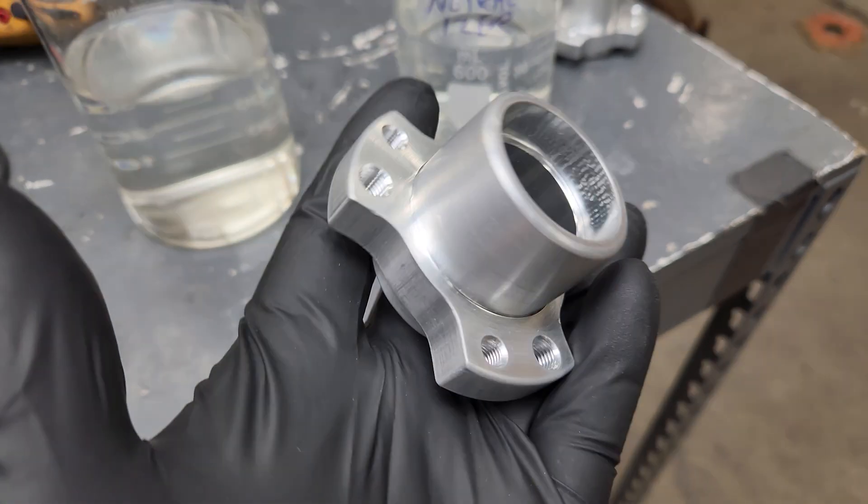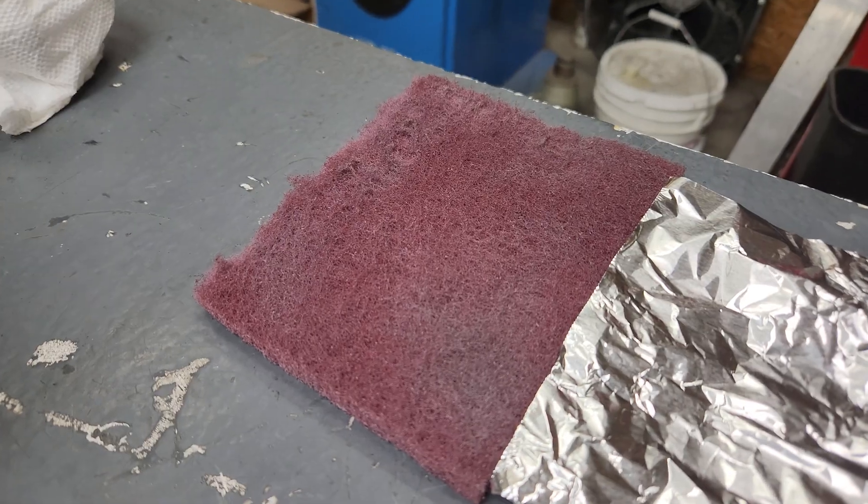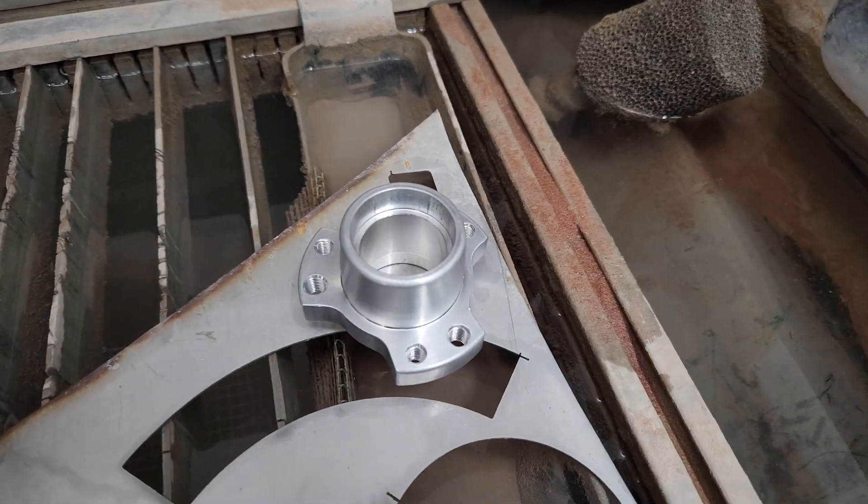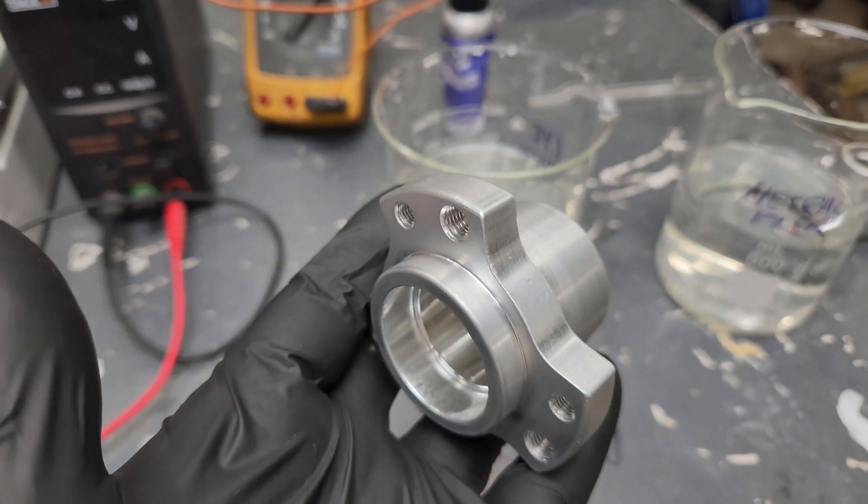Here's the parts I'm going to be anodizing and first thing you have to do is take your part and clean it up real good with a Brillo pad. After you wash it up with some soap and water just rinse it off and make sure that there's no grease and it's completely clean.